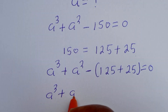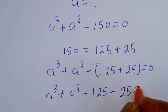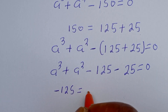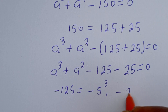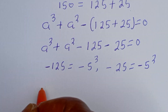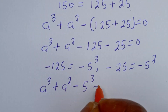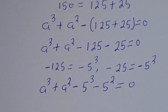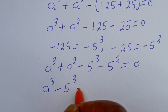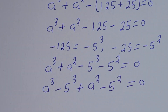So a to the power of 3 plus a squared minus 125 minus 25 is equal to 0. Now, minus 125 is equal to minus 5 to the power of 3, and minus 25 is the same thing as minus 5 squared. Then this is a to the power of 3 plus a squared minus 5 to the power of 3 minus 5 squared is equal to zero.